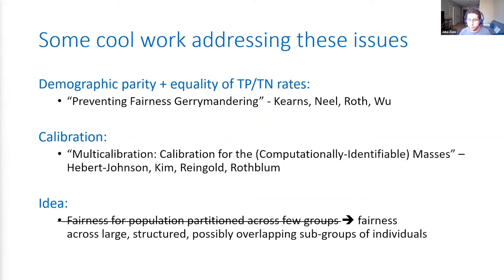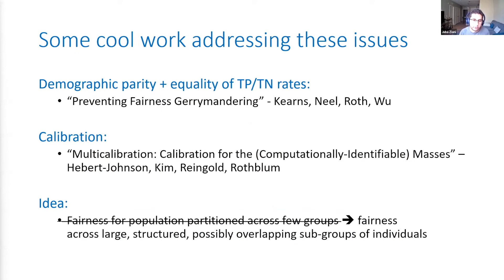There is some cool work addressing those issues. For demographic parity and equality of true positive and negative rates, there is the 'Preventing Fairness Gerrymandering' paper by Kearns, Neel, Roth, and Wu. For calibration, there is the 'Multicalibration' paper by Hébert-Johnson, Kim, Reingold, and Rothblum. Instead of guaranteeing fairness for a population partitioned into a few groups, those papers show how you can guarantee fairness for large, structured, and possibly overlapping subgroups of individuals.